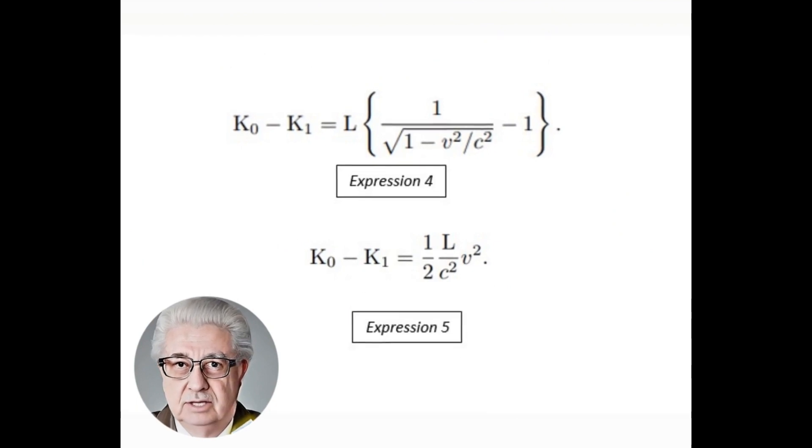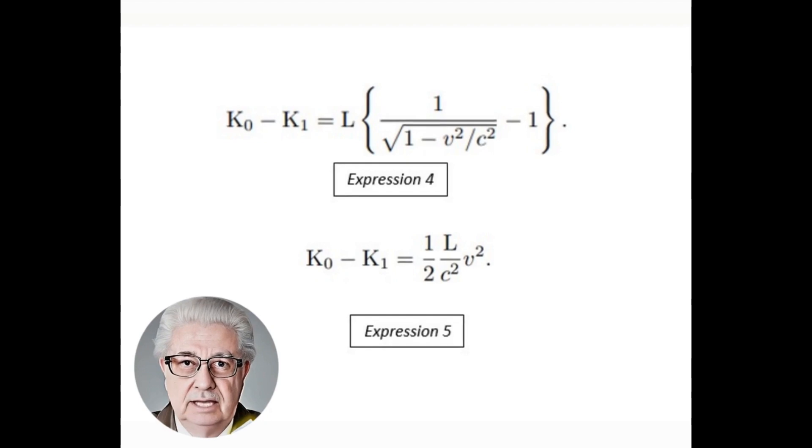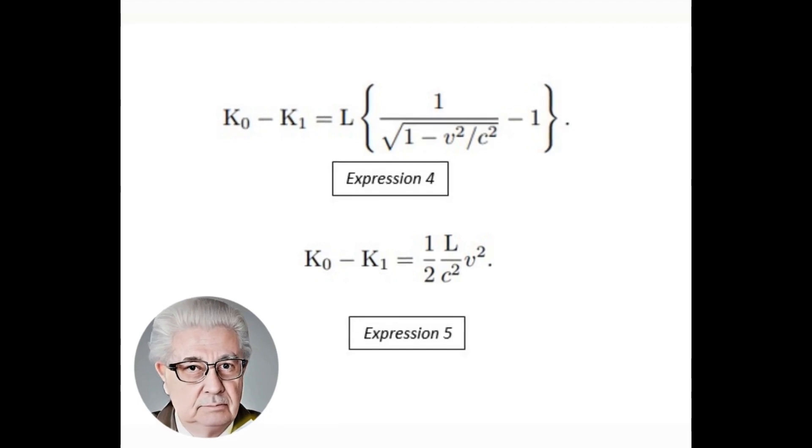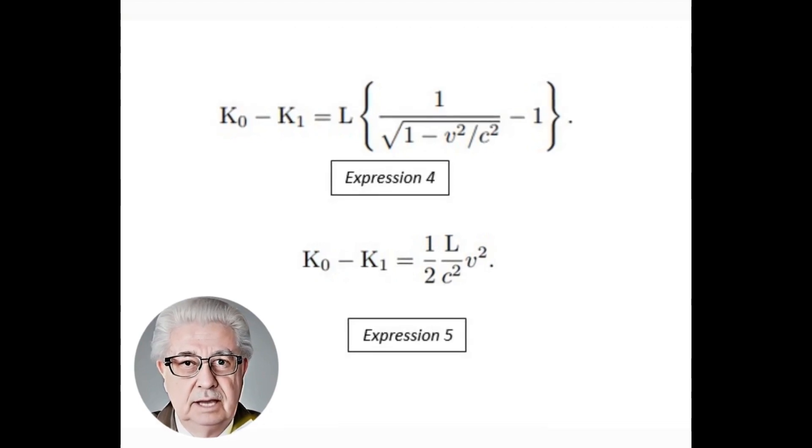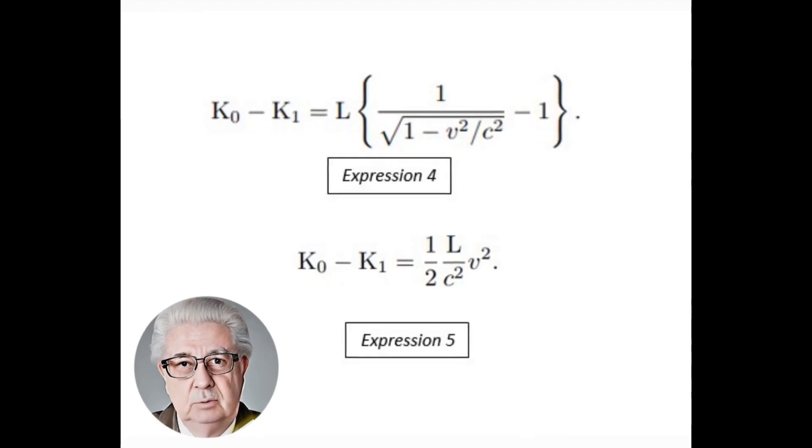Simplifying expression 4, we can turn it into expression 5. What does this transformative step that Einstein makes, where does it come from? In this step, Einstein is making an approximation in which he neglects third order and higher magnitudes, see explanation below.